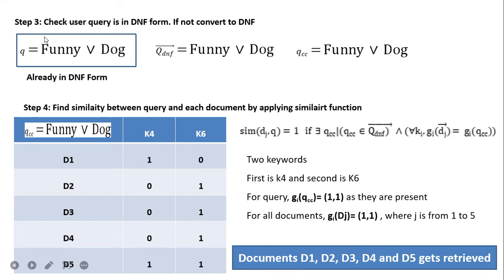Now we check the next query: 'funny OR dog.' This is again in DNF form, so qcc = funny OR dog. The same matrix for k4 and k6 is used. The gi(qcc) is again (1,1) since both terms are present. But since the operator is OR, either keyword being present is sufficient. Therefore, every document satisfies the query and all documents get retrieved when we give the query 'funny OR dog.'